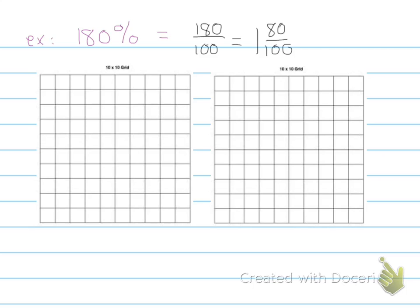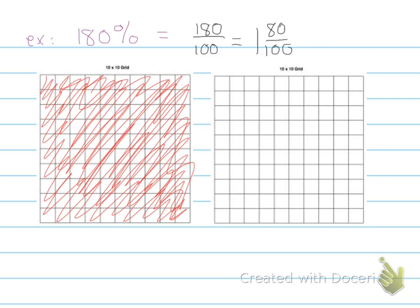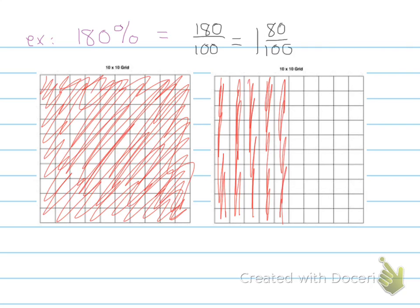In order to model this, one whole grid would be shaded in, so 100 percent of this grid because it's one whole. We're just going to say for time's sake that this is completely shaded in, and then eighty percent, or eighty squares of another grid, would be shaded in. So here's 10, 20, 30, 40, 50, 60, 70, 80, and that's how you would model 180 percent. There's 100 here plus 80 percent shaded in over here.